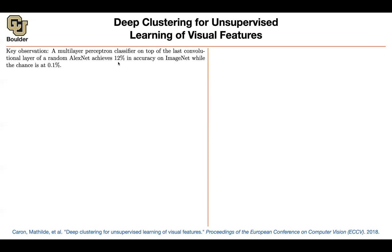Training only the head with the CNN frozen gives you 12% accuracy on ImageNet. That is a lot — if you compare it to chance with 1,000 classes, randomly predicting gives only 0.1% accuracy (1 over 1,000). So 12% is significant. Where is that coming from? It comes from the convolutional structure encoding a lot of prior knowledge — you use the same kernel and shift it over the image, giving the CNN rich structural inductive biases.